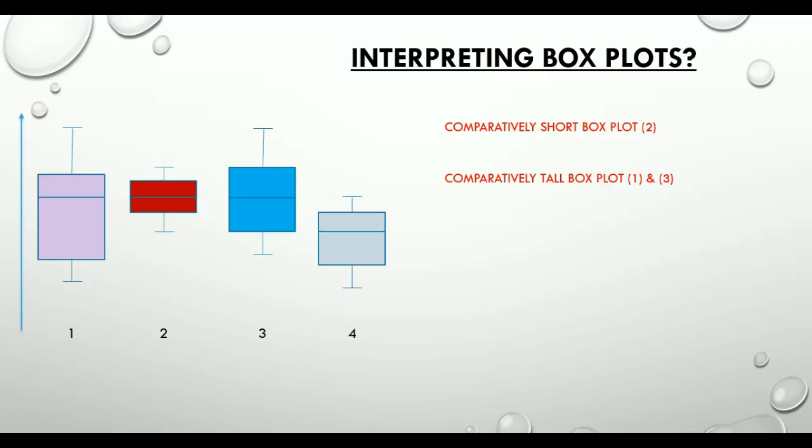Thirdly, let's look at the third and the fourth box plot where we have one box plot much lower or higher than the other. This could suggest a difference between groups. For example, a box plot for the scores of girls could be much higher than the box plot with scores of boys.